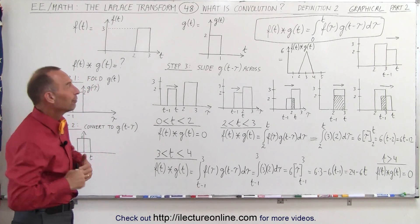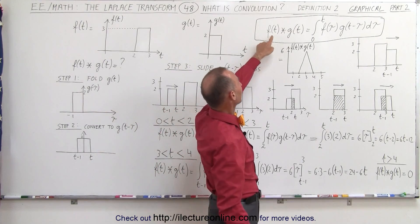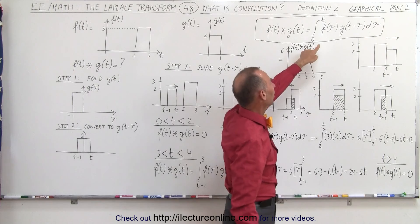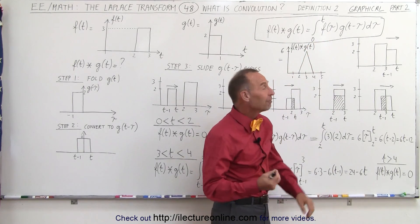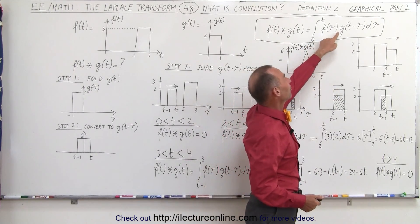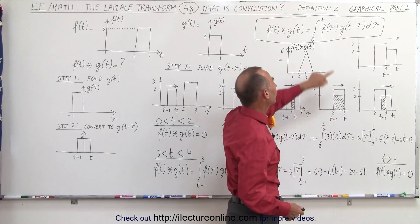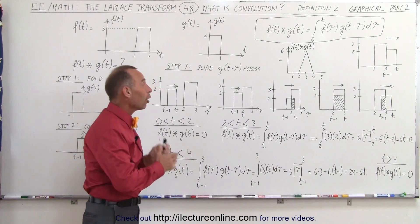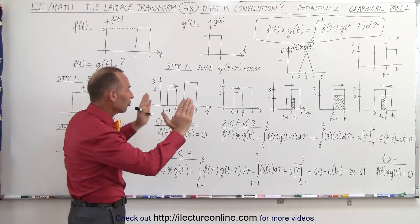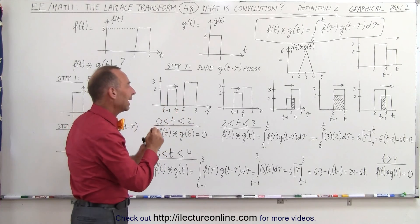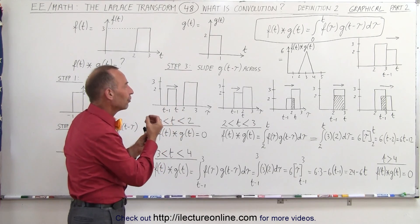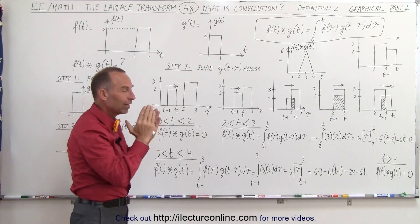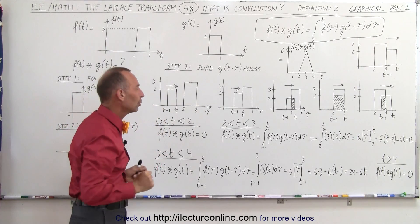In the earlier video, we showed that the convolution between two functions f(t) and g(t) can be written as the integral of f(τ), which is a dummy variable, with g(t − τ) dτ integrated from zero to t. We showed graphically in the previous video that this was simply two functions sliding over one another, and that the value of the convolution was simply the height of the first function times the height of the second function times the amount of the overlap between the two functions.